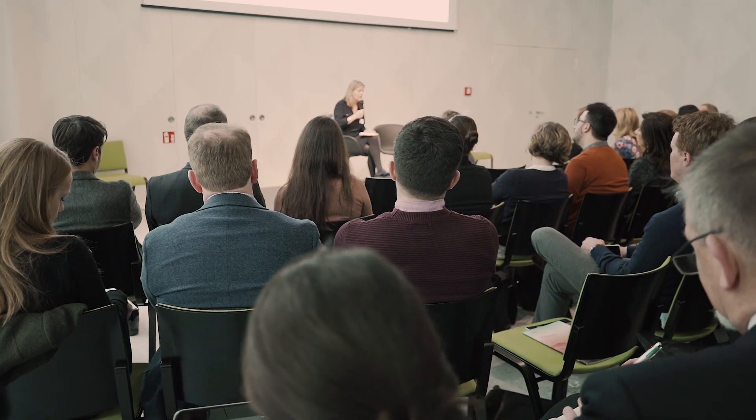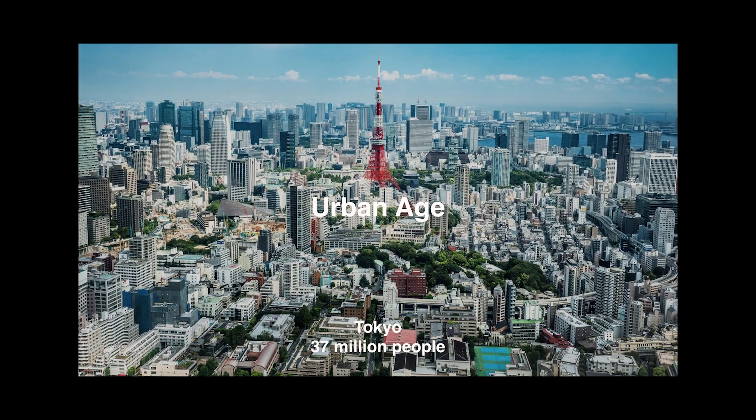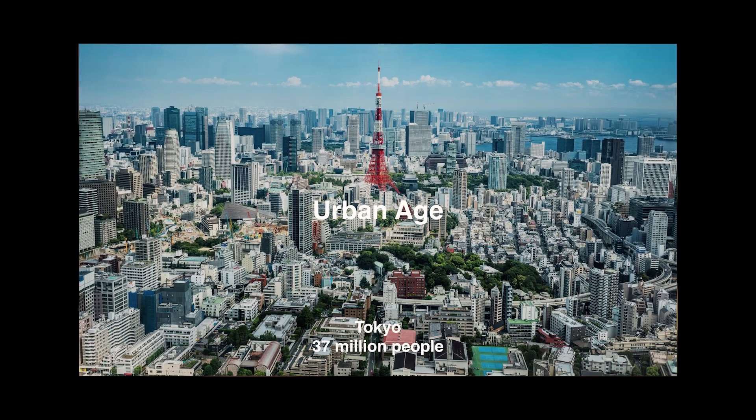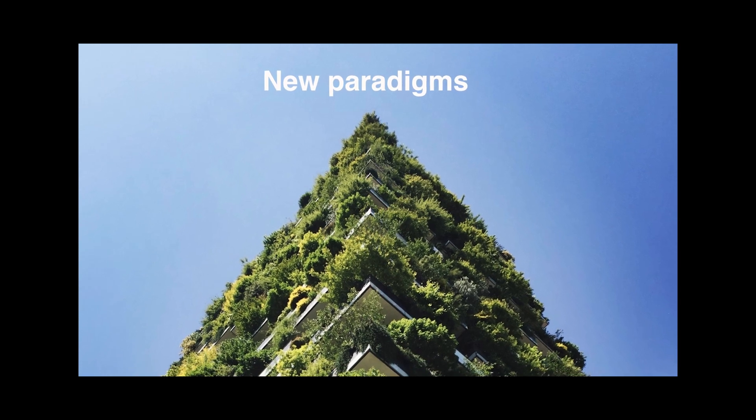The fundamental issue that we have at the moment is that we only have one planet and we have an increasing population, and the patterns of living that we've adopted in terms of consumption and urbanisation mean we're already using about 1.7 planets a year. We need to find a new way of designing that first of all restores the planet and then moves to a new paradigm where design is about enabling people and nature to co-exist.